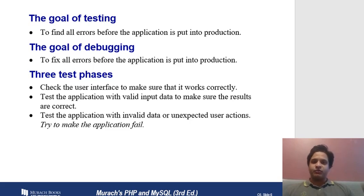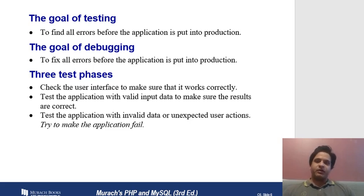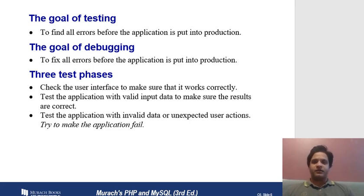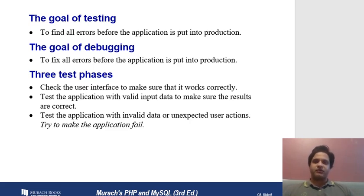In debugging, you go through the code line by line, find all errors, and fix them before testing. It is always easier to debug than to test a large codebase, because if you've written hundreds of lines and the output is wrong, it's very difficult to locate where the error is. With debugging you go part by part, making it easier to locate errors in smaller sections.